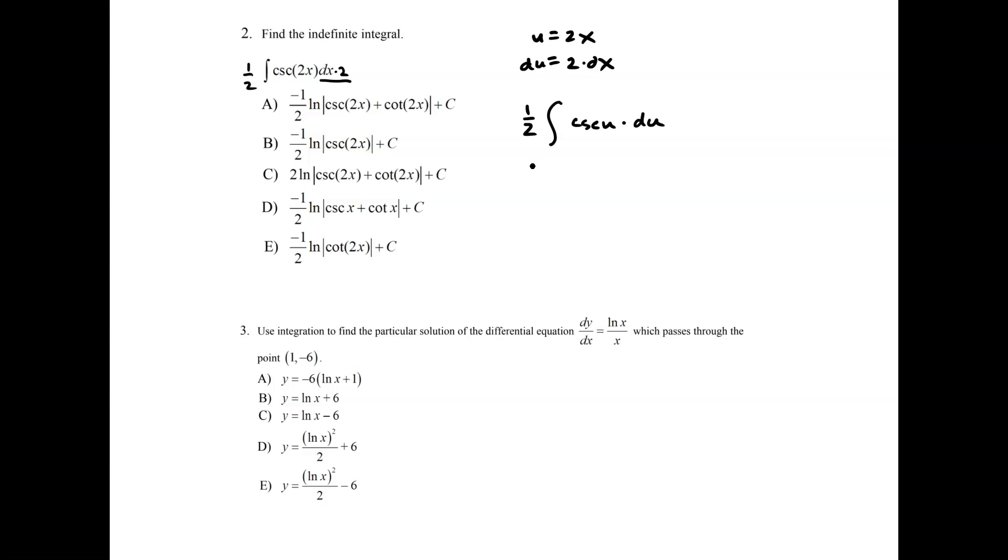And my whole integral becomes 1/2 integral of cosecant of u times 2 times dx gets replaced by du. And like I said, we know this now. So let's substitute in the indefinite integral of cosecant. It is negative ln absolute value of cosecant of u plus cotangent of u, and then we'll say plus c. So the very last step is to back substitute in for u.